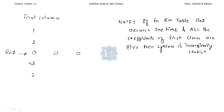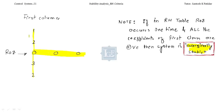Here, all the coefficients of the first column are positive and you are getting one ROZ. What it means? Your system is marginally stable — because on the imaginary axis you are getting symmetric poles. Please note down this: whenever you are getting one ROZ and all coefficients of the first column are positive, then your system will be marginally stable.